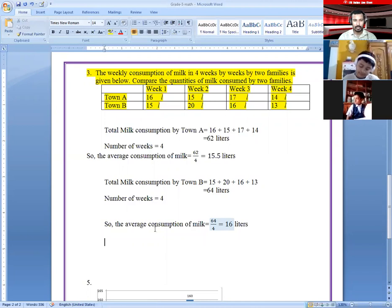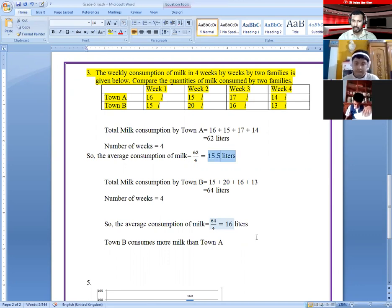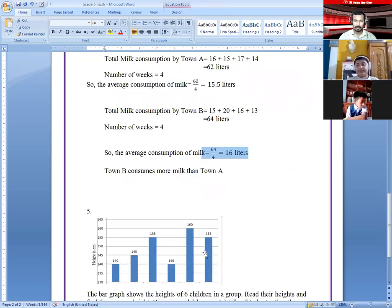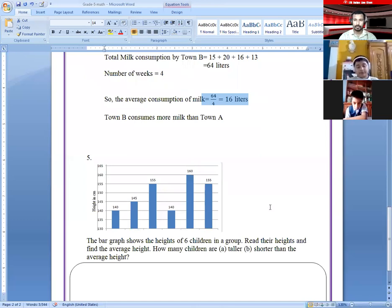So comparison: Town B consumes more milk than Town A. Town A consumes 15.5 liters per week and Town B consumes 16 liters per week. So they consume more milk than Town A - 0.5 liters more. Done.